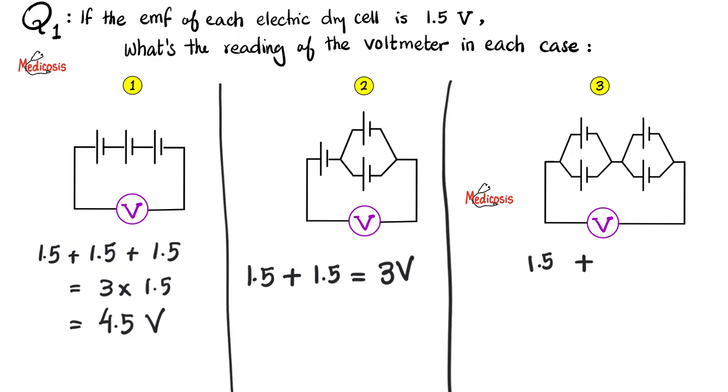And on the right, it's same thing, 1.5, 1.5, you only take one of them, which is 1.5 volts. 1.5 plus 1.5 equals 3 volts.